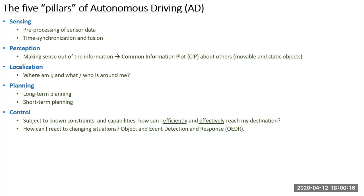The type of vehicle on which the autonomous system is implemented directly affects the control actions possible. Another key element under control is object and event detection and response — how the system detects objects and events, and how it responds to changing situations. These are the five pillars of autonomous driving. I'll stop here for about 30 seconds for the audience to review them.